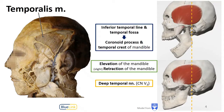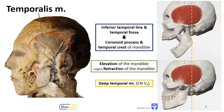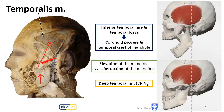The temporalis muscle has its origin on the temporal fossa — this whole big area — with the inferior temporal line as the specific line associated with the muscle. It inserts down onto the coronoid process of the mandible and medially onto the temporal crest. As this muscle shortens it pulls the mandible up in elevation. The posterior fibers run more in a transverse direction and act in retraction, so some retraction is also done by the temporalis.